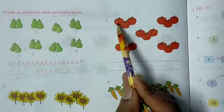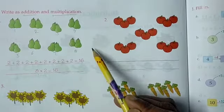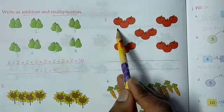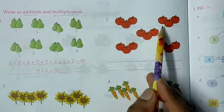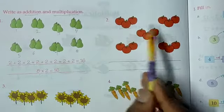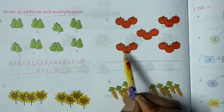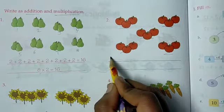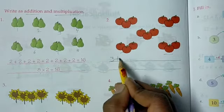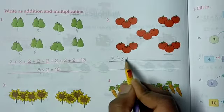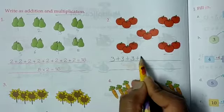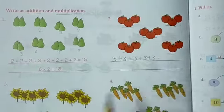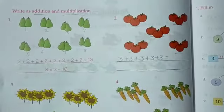Now see here. What are the apples in each group? One, two, three — how many apples are in each group? Three apples. And how many groups are there? One, two, three, four and five groups. So each group has three apples. First group is three, then second, third, fourth and fifth. So five times we will add three.